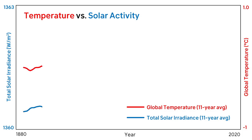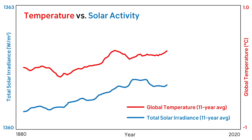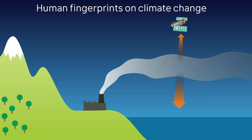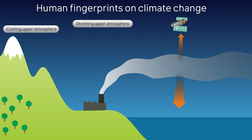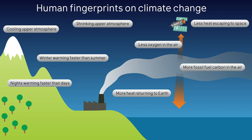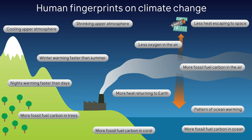Let me give an example. One climate myth is that the Sun is causing global warming. It should be enough to show how over the last few decades, the Sun and climate have been moving in opposite directions. Global warming can't be caused by the Sun because solar activity has been having a cooling effect on climate. But that isn't enough — you also need to provide an alternative explanation for global warming. In this case, there are many observed patterns in climate change that not only rule out the Sun, but also point to an alternative explanation.